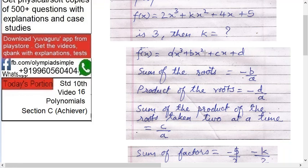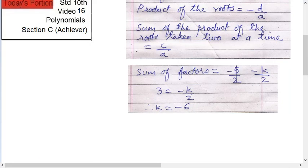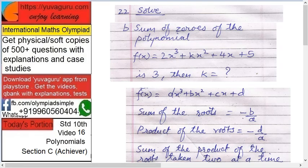Therefore f(x) equals to if ax³ + bx² + cx + d, then sum of the roots equals to -b/a. Product of the roots is -d/a. Sum of the product of the roots taken 2 at a time is c/a. Remember this formula by heart or this expression by heart. So in our case what we want sum of the roots is given 3. So we will be requiring -b/a. Means what? -k/2. Because this is b, this is a. So sum of the factors equals to -k/2. But that is given as 3. So k equals to -6. That's the answer.